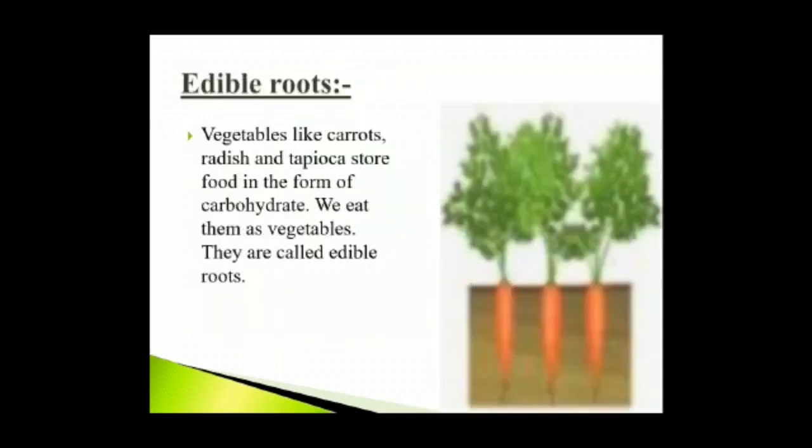Edible roots: Vegetables like carrots, radish and tapioca store food in the form of carbohydrates. We eat them as vegetables. They are called edible roots. Carbohydrates give us energy.